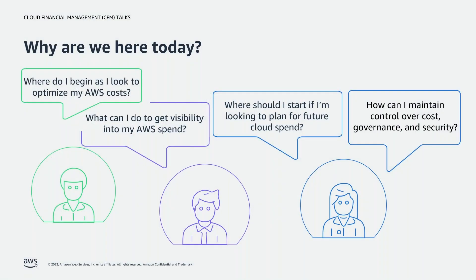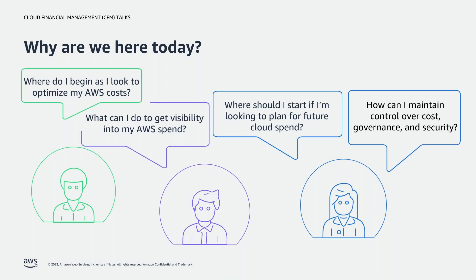This talk is built around questions we know customers have. Today it's focused around: where do I begin as I start to look to optimize my AWS costs? What can I do to get spend visibility? Being able to see those costs is a high priority when just getting started. Where can I start if I'm looking to plan for future cloud spend? How do we see costs, know where to save, plan, and maintain control?